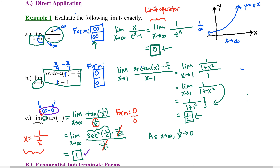When using L'Hôpital's rule, you must have either infinity over infinity or 0 over 0. If you get something like infinity times 0, you can manipulate it algebraically until you have that indeterminate form, then apply L'Hôpital's rule to execute the limit.